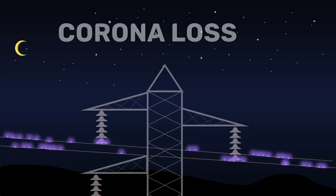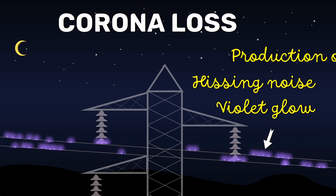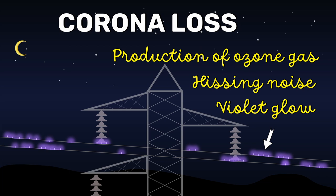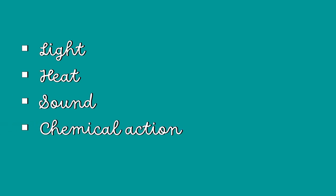Next, let's see about corona loss. The phenomenon of violet glow, hissing noise, and the production of ozone gas in the overhead transmission line is known as corona. Here, the power is dissipated in the form of light, heat, sound, and chemical action.